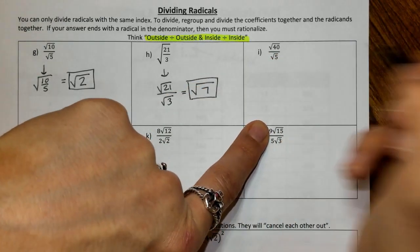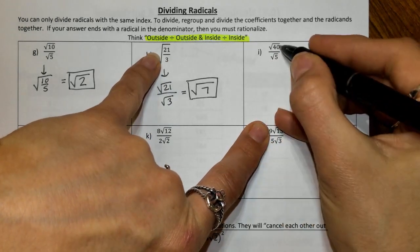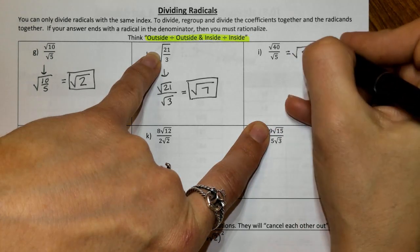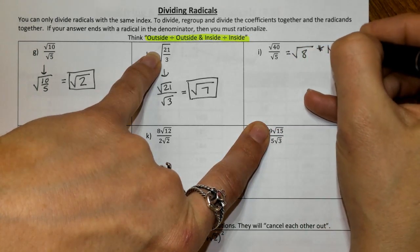With I over here, we're going to go ahead and divide this out. We're going to have the radical sign, because these are both radicands. 40 divided by 5 is 8. This is going to be another one that is not simplified.